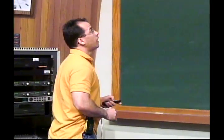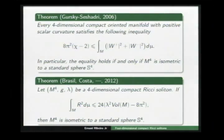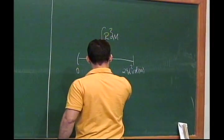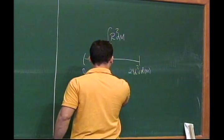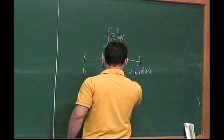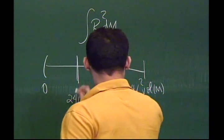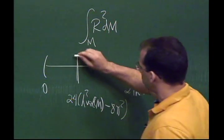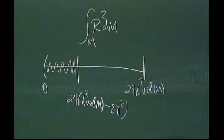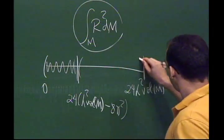Using this, I proved together with Brazilian collaborators that if we have a four-dimensional compact Ricci soliton such that the integral of scalar curvature squared satisfies a certain estimate — specifically, the integral lies in the interval (24λ²Vol(M) − 8π², 24λ²Vol(M)) — then M⁴ is isometric to the standard sphere. Thus, for a non-trivial result where the Hitchin-Thorpe inequality holds as equality, this integral must lie in this specific interval.